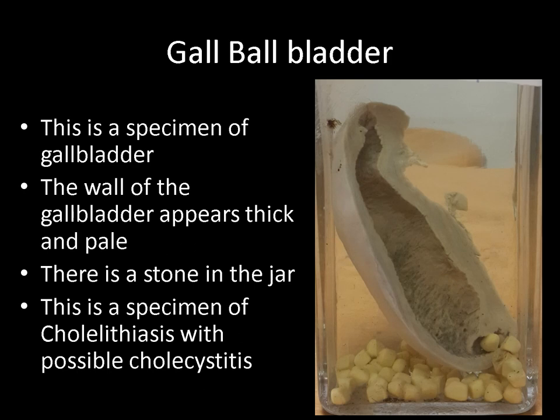This is a very common specimen kept in the exam. This is a specimen of a gallbladder. The wall of the gallbladder appears thick and pale. You should not miss the stones at the bottom of the jar. And hence I call this as the specimen of cholelithiasis, possibly cholecystitis, and the surgery done is cholecystectomy.